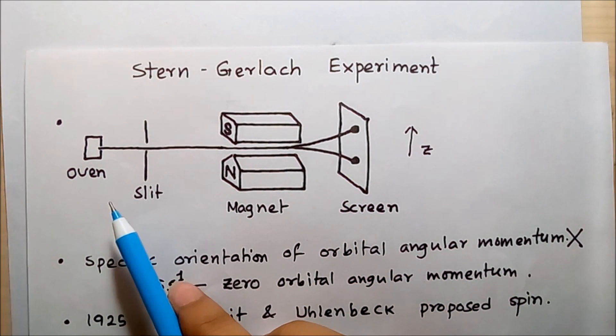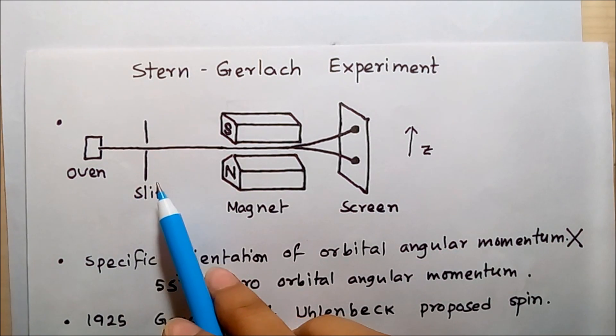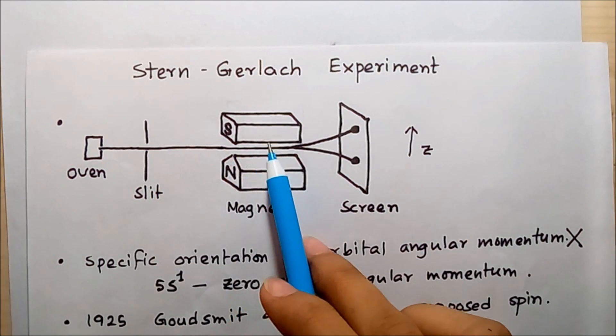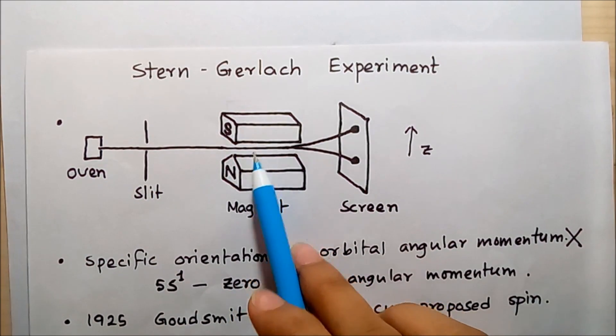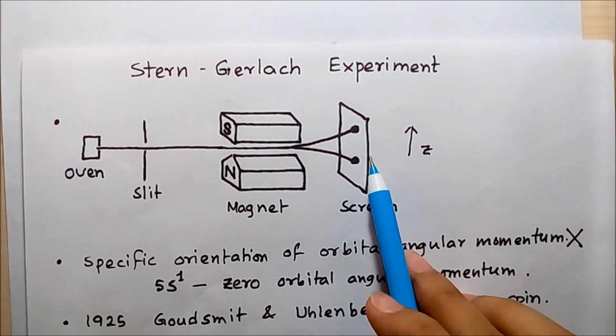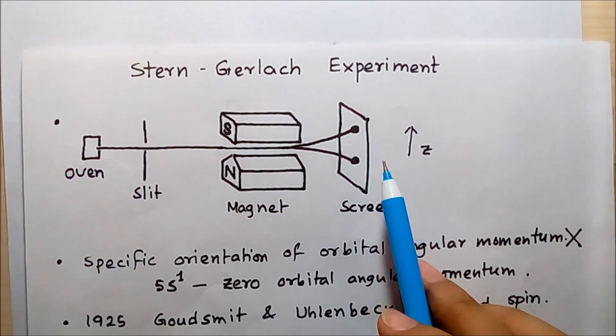Stern and Gerlach used silver atoms. They put the atoms inside the oven. As a result of being heated, the silver atoms acquire kinetic energy, go through the slit, and are then subjected to the magnetic field. Stern and Gerlach found two distinct spots on the screen.